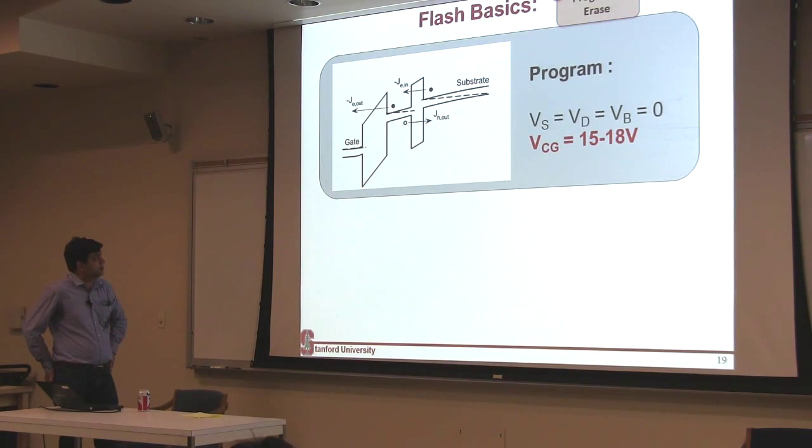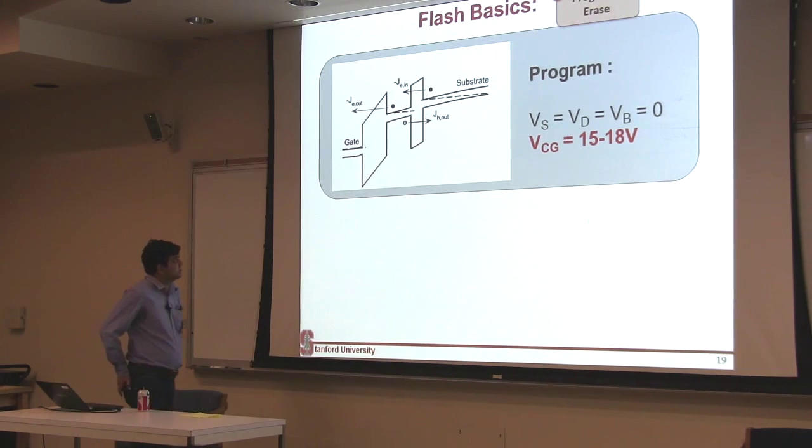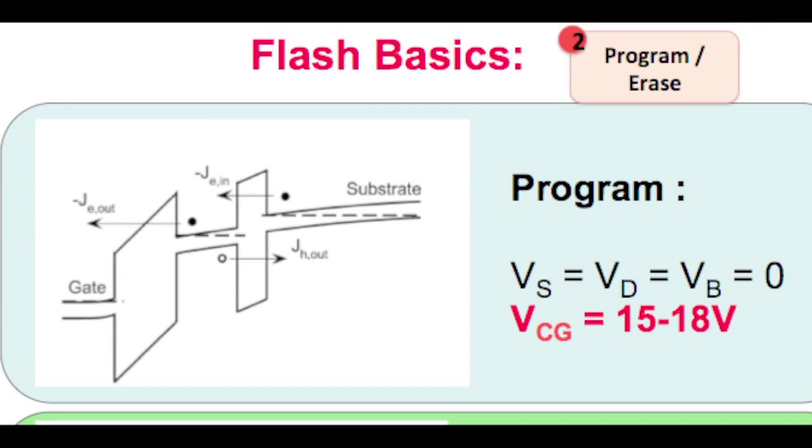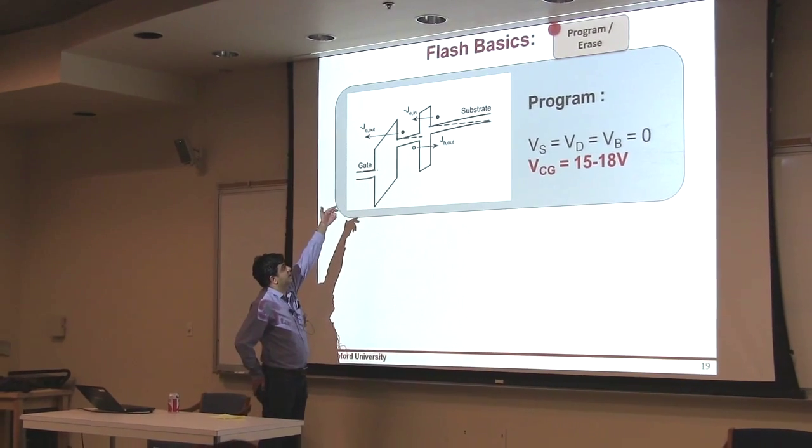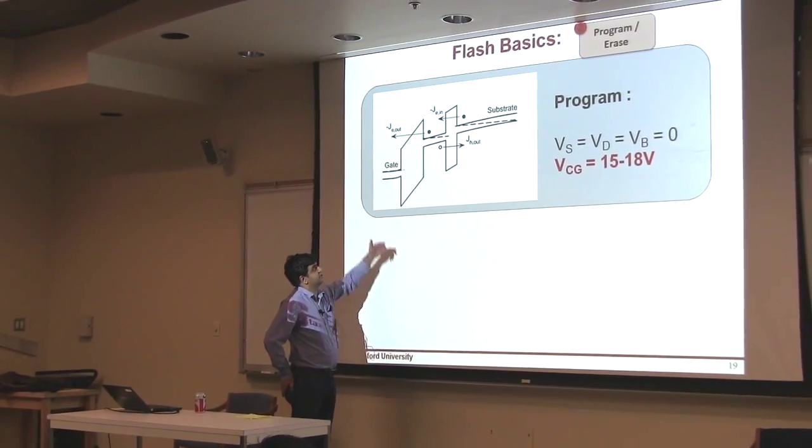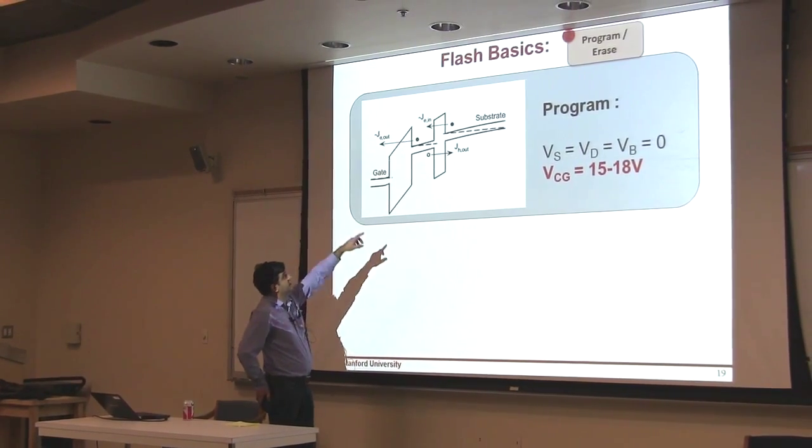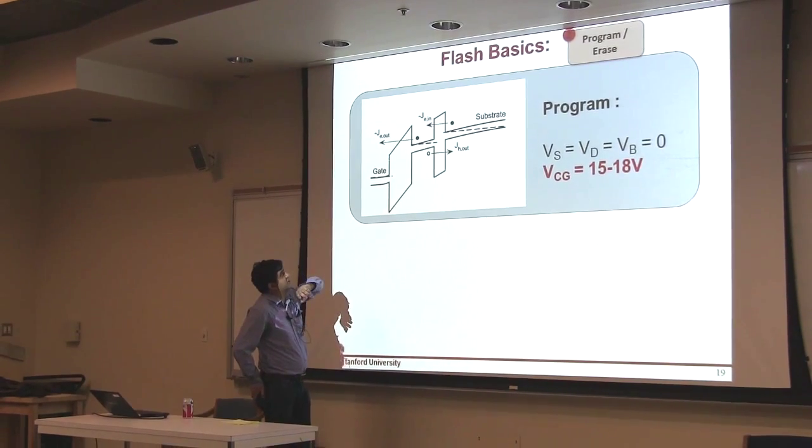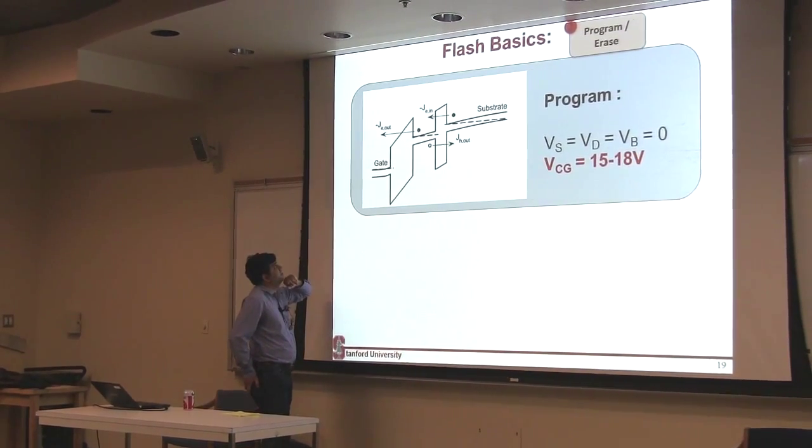So here's how the band diagram would look like. This is the substrate, and remember I told you there are two dielectrics. There's a thinner dielectric and this is your thicker dielectric or your interpoly dielectric. Sometimes it's also called a blocking dielectric. So when you program a cell, you apply a very high voltage on your control gate. When it comes down on this band diagram, you get a very large amount of tunnel current in and a less amount of tunnel current out.